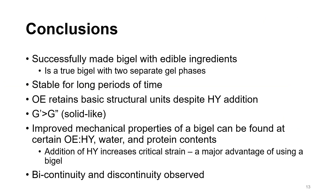In conclusion, we were able to successfully make bi-gels with edible ingredients. We found that our gels were stable for long periods of time and had solid-like behavior. Despite hydrogel addition, our oleogel retained its key basic structural units — the soy lecithin reverse micelle and stearic acid bilayer — but lost potential long-range interactions. We found that at certain ratios of phases, water contents, and protein contents, a bi-gel can have improved mechanical properties. As hydrogel content increased, our bi-gel had an increased critical strain, which is a major advantage over a pure oleogel. Finally, we were able to observe the continuity or discontinuity of phases using microscopy.